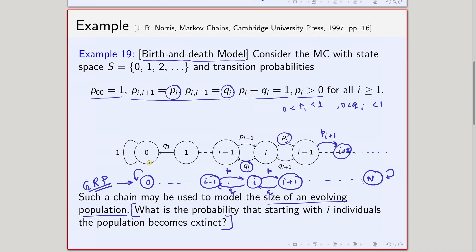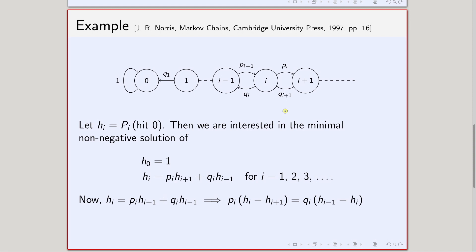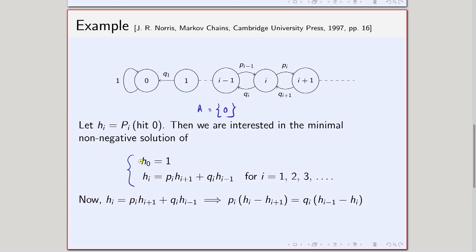Let us try to solve this. To solve this, I have to write the system of linear equations. Here h_i is as previously denoted, and the set A is again the singleton {0}, so I write h_i instead of h_i^0. Using our theorem: if I am already in 0, then the hitting time is 0, which is finite, so h_0 = 1.